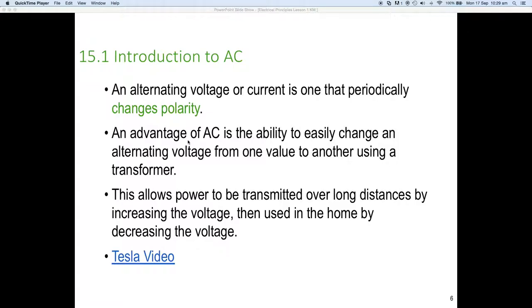This is called mutual inductance. Because of the mutual inductance and the number of windings that are involved, we can actually increase the voltage or decrease the voltage because of the alternating current nature of the AC supply. This allows power to be transmitted over long distances by increasing the voltage, then used by the home by decreasing the voltage.